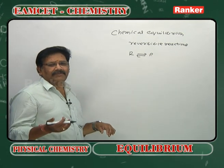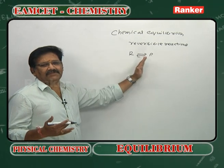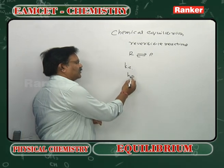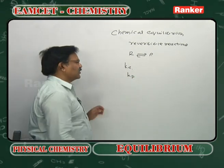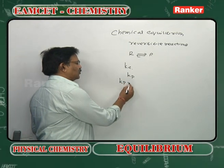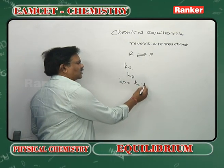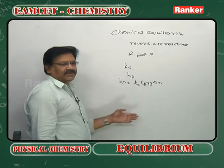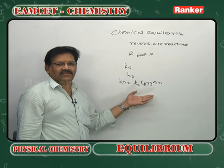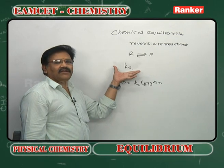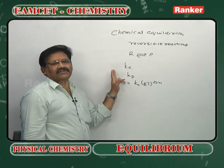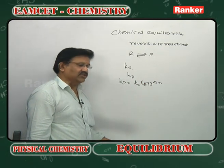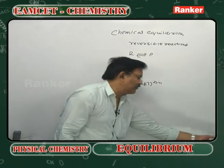The chemical equilibrium constant can be expressed in two ways: in terms of molar concentration (Kc), and in terms of partial pressures (Kp). The relation between them is: Kp = Kc × (RT)^ΔN, where ΔN is the number of moles of gaseous products minus the number of moles of gaseous reactants. Higher values of Kc and Kp indicate a greater extent of the forward reaction.